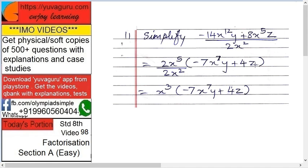And x raised to 5 as it is, and z over here. So what it becomes: it becomes x cube into minus 7x raised to 7y plus 4z. That is the required answer.